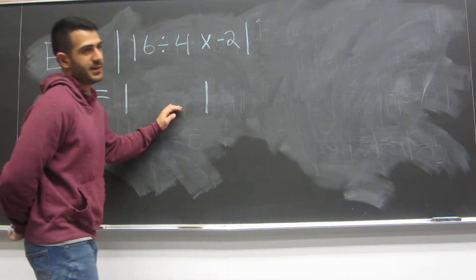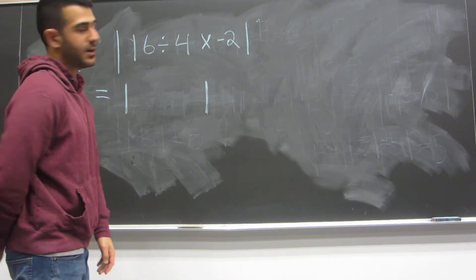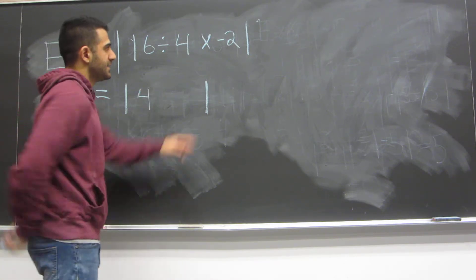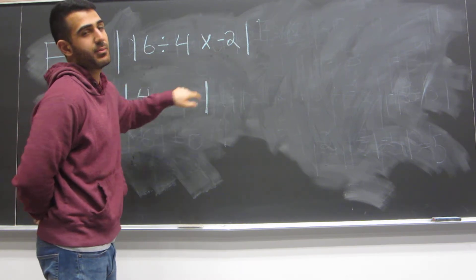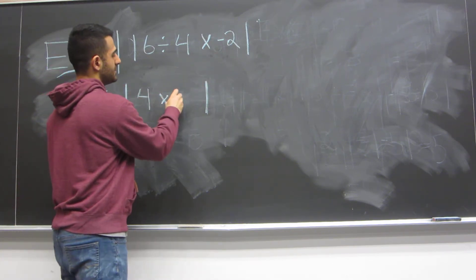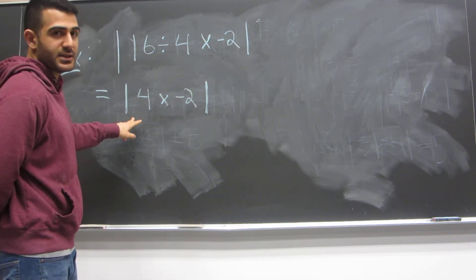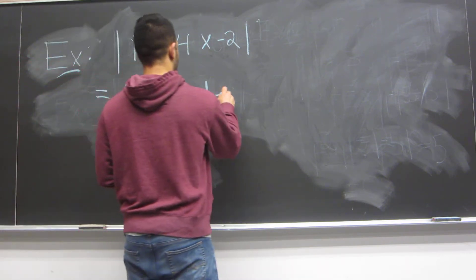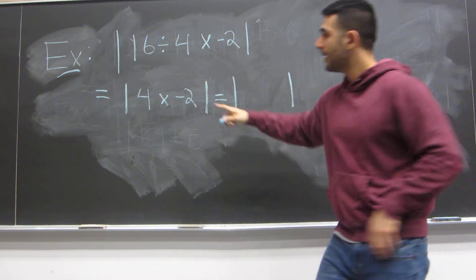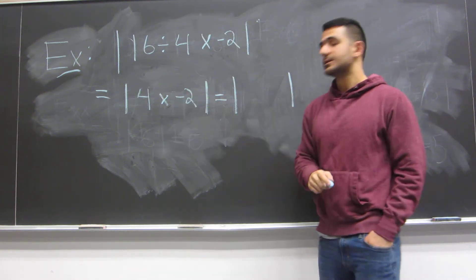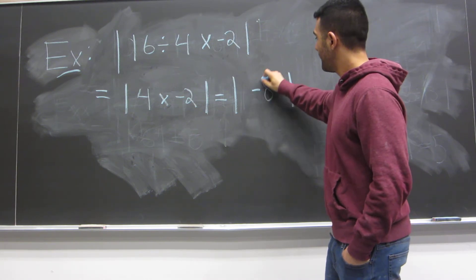We can simplify, so we put absolute value symbols. What is 16 divided by 4? That's just 4. Since we didn't do anything with the times negative 2, we bring it down — so we have the absolute value of 4 times negative 2. Can we simplify further? Yes. What is 4 times negative 2? That's negative 8.